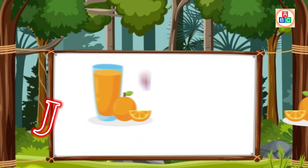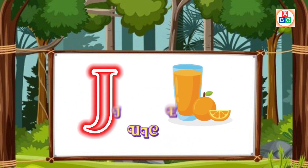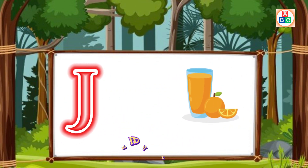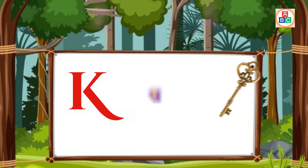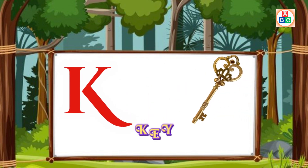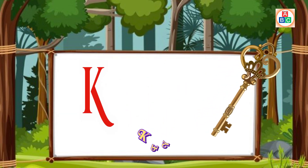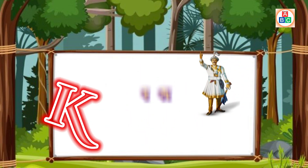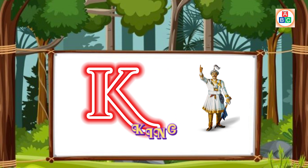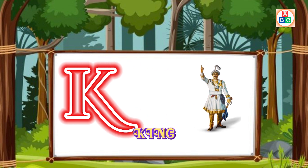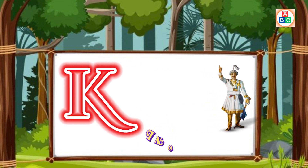J is for Juice. J. J. Juice. K is for Key. K. K. Key. K is for King. K. K. King.